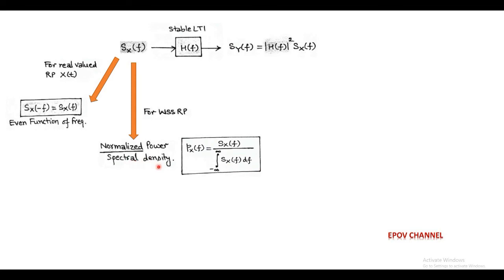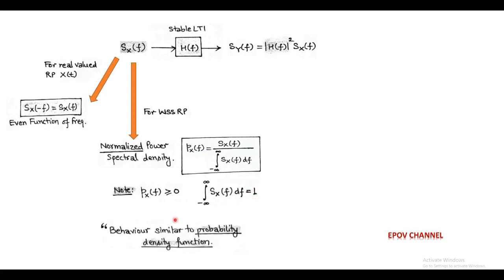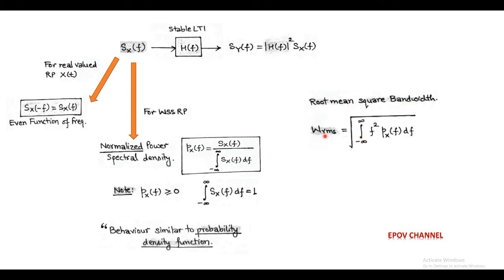The normalized power spectral density P(f) = S(f) / ∫ S(f) df. We note that the normalized power spectral density is always greater than or equal to 0, and the area under the curve is unity. The behavior of normalized power spectral density is similar to a probability density function. In a stable LTI system, we can also find the root mean square bandwidth, determined using the normalized PSD: W_rms = √(∫ f² P(f) df). In place of P(f), we can write the ratio S(f) / ∫ S(f) df. This is the expression of root mean square bandwidth.